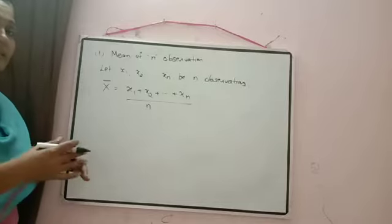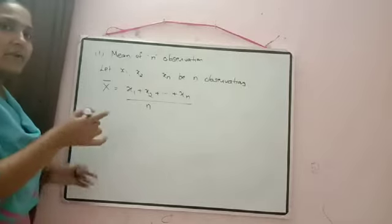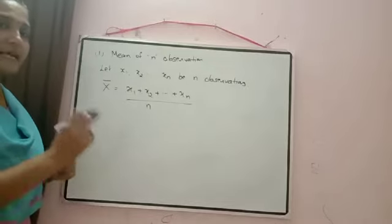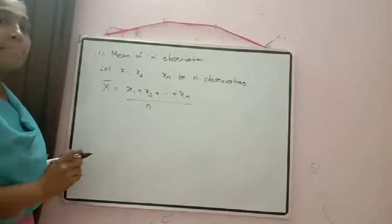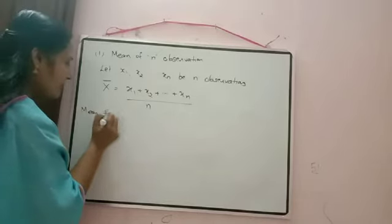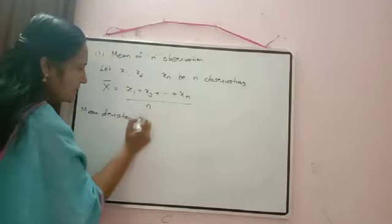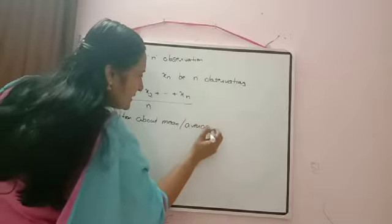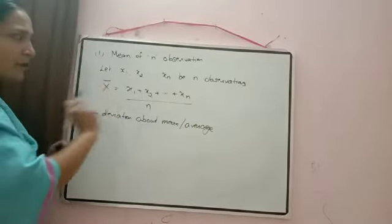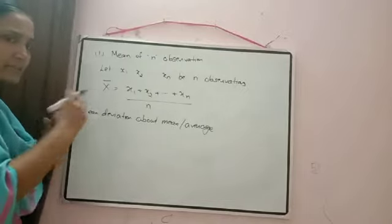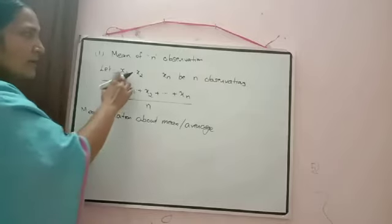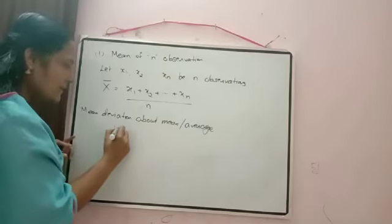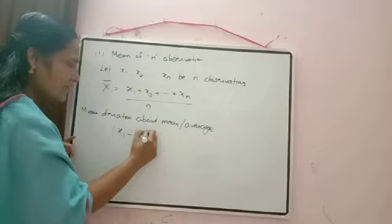Now, what we have to calculate is how much each value deviates. We are calculating the deviation from the mean, and also taking the average of these deviations — that is called mean deviation from mean, or mean deviation about mean. How much each value deviates from the mean: deviation means how much difference there is in each value. We calculate x̄, and then to avoid the negative sign we take the modulus. So |xᵢ - x̄| gives the difference between the mean and the given value.